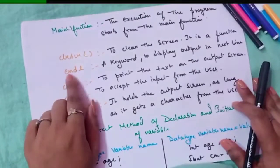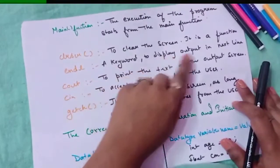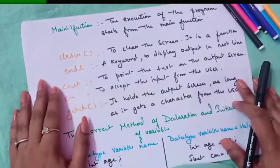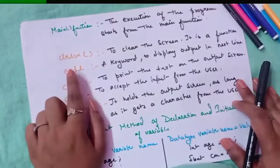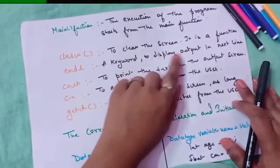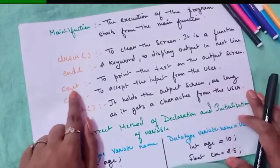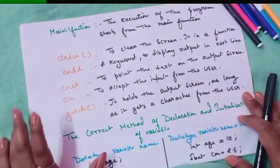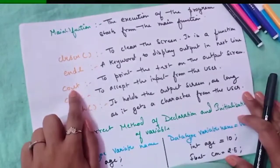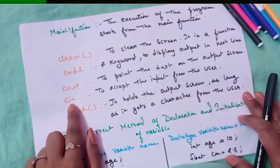What is `endl`? It is spelled e-n-d-l with no space. It is a keyword used to display output on the next line. Whenever we want to display output on the next line, we use `endl`. Now, `cout` comes under the iostream header file — its purpose is to print text on the output screen. Whenever we want to give output to the screen, we use the `cout` object.